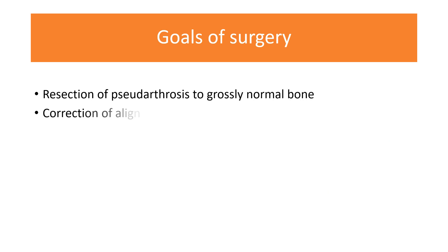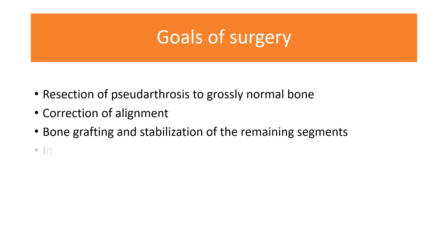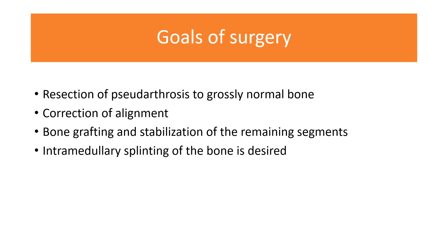The goals of surgery include resection of the fibrous hamartoma, which is the pathological lesion, resection of the pseudarthrosis to grossly normal bone, correction of alignment, bone grafting, and stabilization of the remaining segment. Intramedullary splinting of the bone is desired.